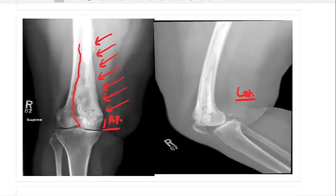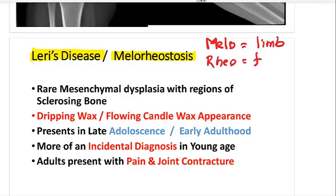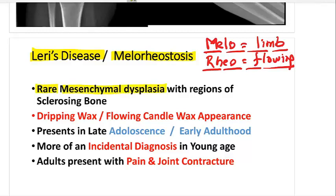This is what is called the molten candle wax or flowing candle wax appearance, and it is classical of Larry's disease — also known as melorheostosis. 'Melo' basically means limb, 'rheo' basically means flowing. So there is a flowing bone within a limb, specifically a long bone. This condition is certainly rare — a mesenchymal dysplasia with a sclerosing bone appearance described as dripping or flowing candle wax.